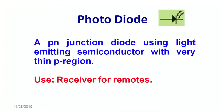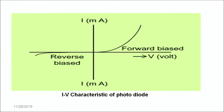Another type of diode is a photodiode. A photodiode is basically a p-n junction diode which uses a light emitting semiconductor with a very thin p region. This is the symbol of the photodiode. The photodiode receives light and then converts it into electrical current. It is basically used as receivers for remote. A photodiode primarily works as a forward bias diode. Beyond a certain voltage value, there is a sharp increase in the current and thus the diode works like this.